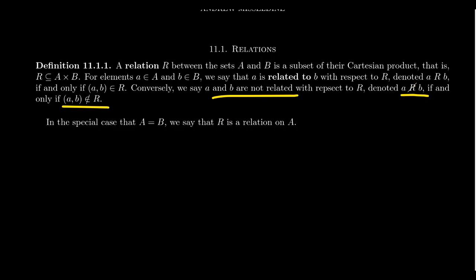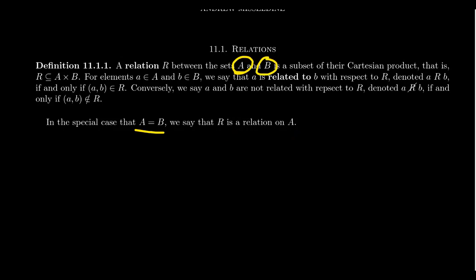While we can talk about relations between two sets A and B, typically when we talk about relations we have one set in mind — A and B are the same thing. So instead of a relation from A to B, we talk about a relation on A itself. When we discuss functions in the future, those will be relations where A and B are not typically the same. For now, we focus on a single set, looking for a subset of A cross A, often written A squared.